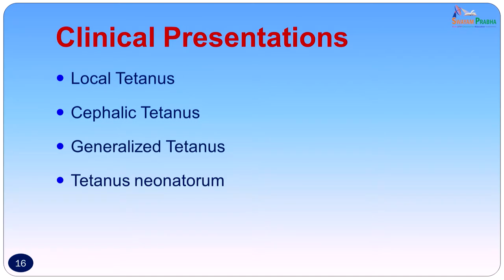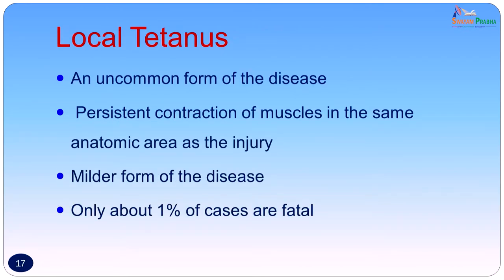The clinical presentation may vary. It can present as local tetanus — the mildest form — cephalic tetanus, generalized tetanus, or tetanus neonatorum. Local tetanus is an uncommon form, presenting as persistent contraction of muscles in the same anatomic area as the injury. Only about 1% of cases are fatal, and our patient responded well to treatment and was sent home.